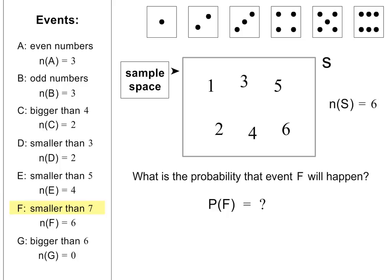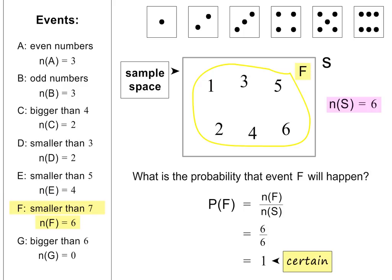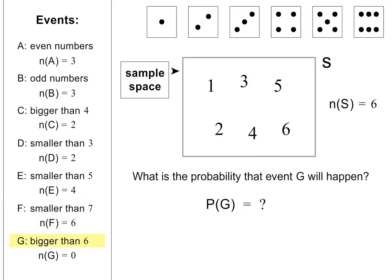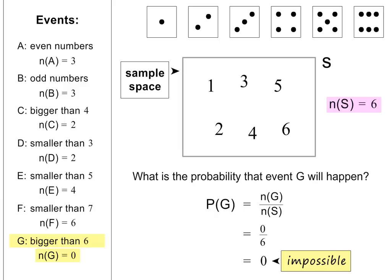What is the probability of getting a number smaller than 7? Using the formula, this is 6 out of 6, which is equal to 1. An answer of 1 means that the event is certain to happen — you will definitely get a number smaller than 7 when you roll a die. And what about the probability of getting a number bigger than 6? Using the formula, this gives an answer of 0 over 6, which is equal to 0. An answer of 0 means that the event is impossible — you will never get a number bigger than 6 when you roll a die.